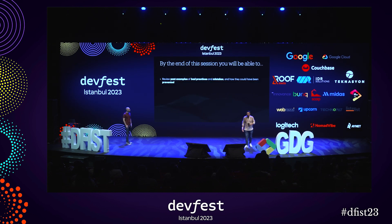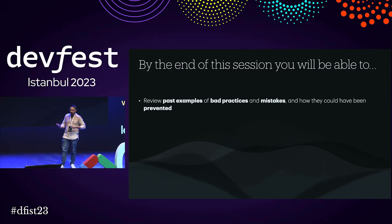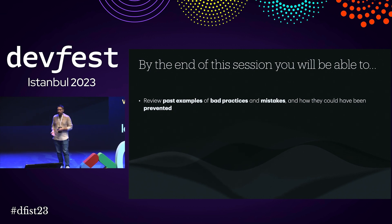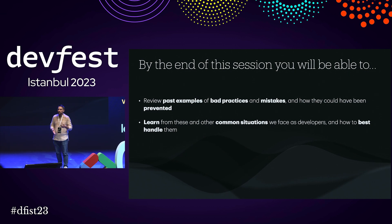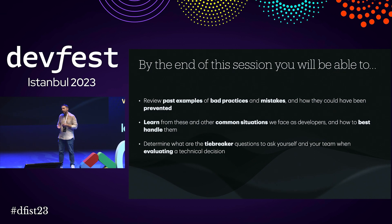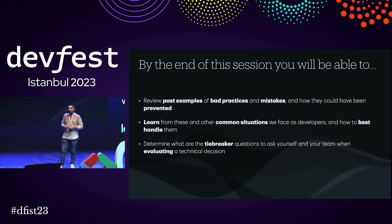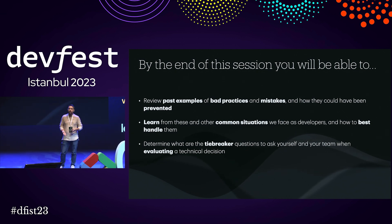By the end of this session, you will be able to review some past examples of bad practices, some mistakes that we've done, and what you could have done to avoid them. You will be able to learn from practically some common situations that we face as developers on our day-to-day life, and also determine some tie-breaker questions when evaluating decisions around yourself and your teams.